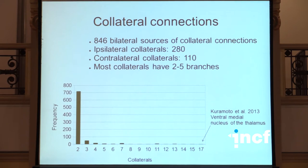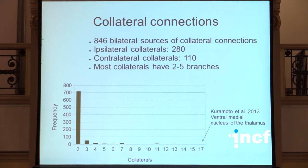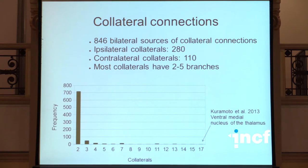Recently, we introduced a new type of connection called collateral connection. These are branches of axons, and the largest frequency of these collaterals are collaterals with two branches. But we found also collaterals of up to 17 axonal branches in a particular type of neurons in the ventral and medial nucleus of the thalamus described by Kuramoto. These collateral data are available for ipsilateral and contralateral connections.